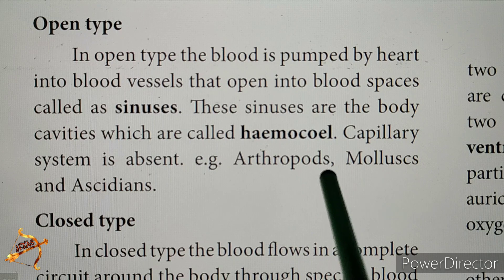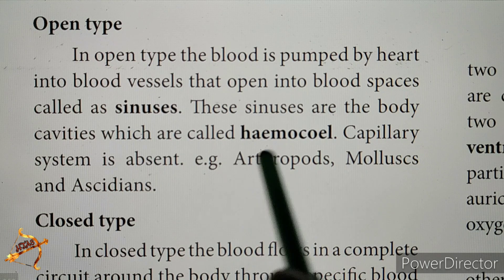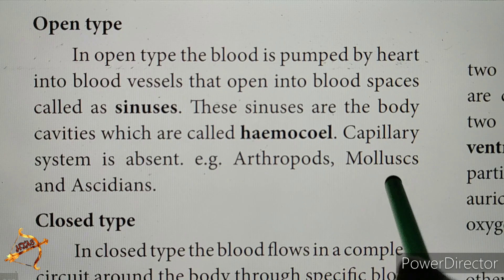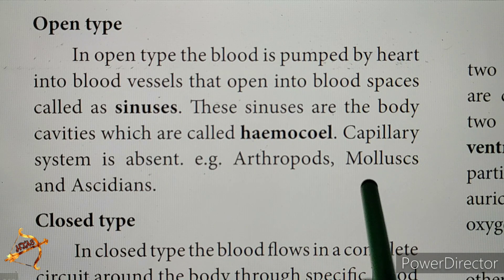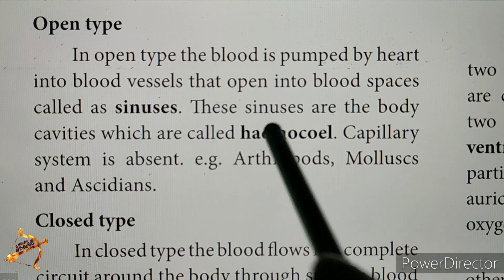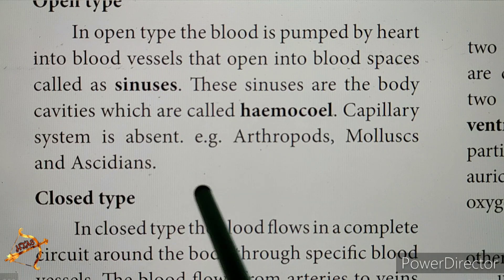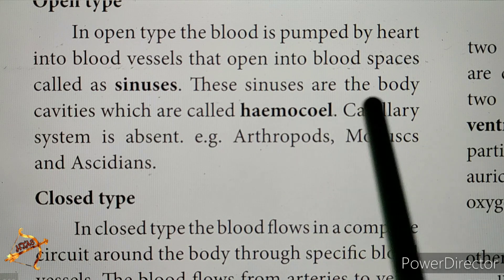Examples of open type circulatory system include arthropods such as insects and spiders, and molluscs. In this open type, blood flows into the sinuses or haemocoel body cavity.